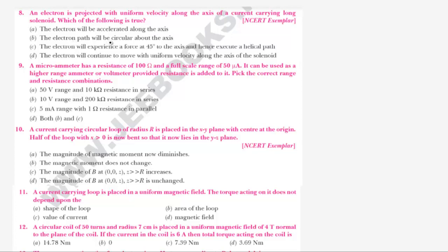Option: Electron path will be circular about the axis — that is false. Electron will experience a force at 45 degrees to the axis and hence execute a helical path — that is also wrong. Electron will continue to move with uniform velocity along the axis of the solenoid — that is correct.